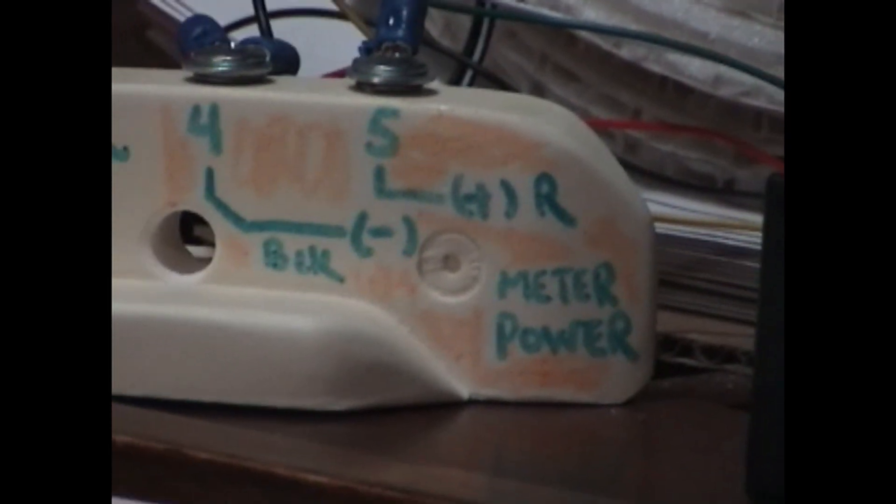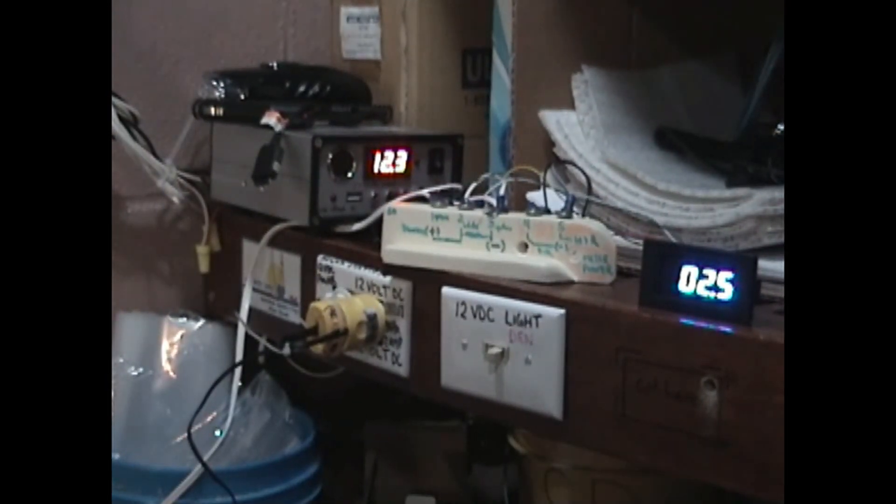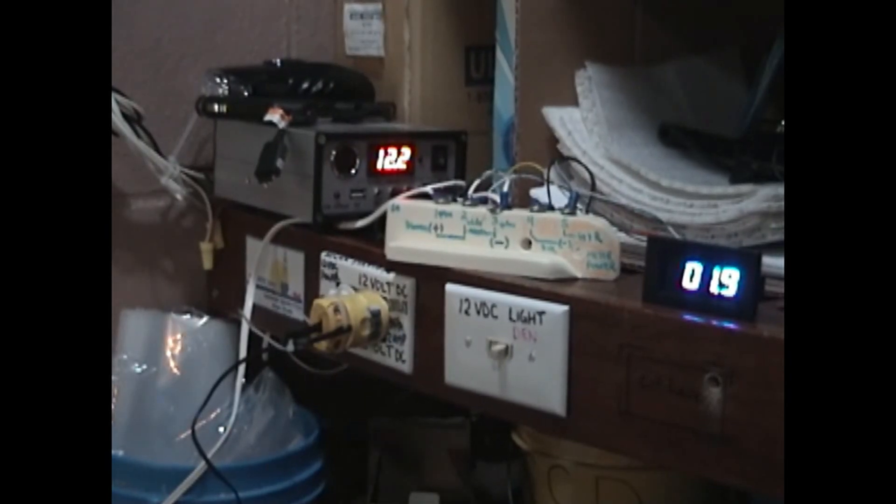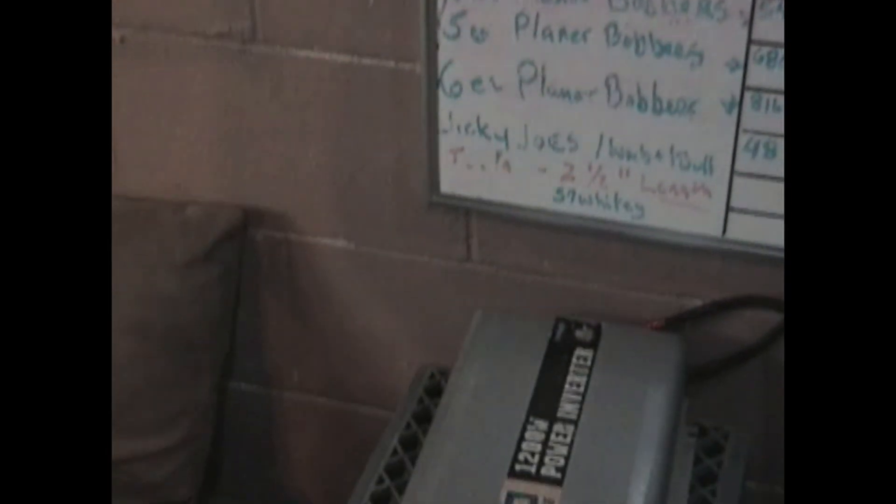Once again here's our terminal block. First of its kind, it's a planer bobber terminal block. It's pretty cool. So we're going to have to hook up some AC power here so that we can run our jigsaw.